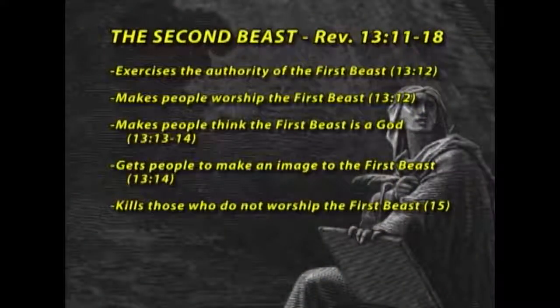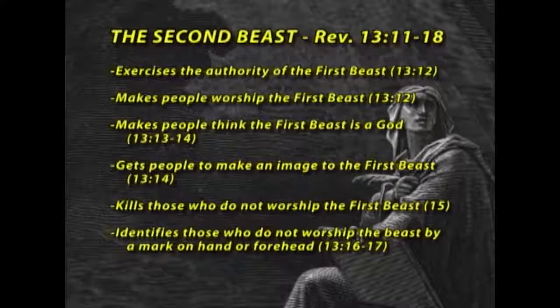Revelation 13, verse 15 tells us this beast killed those who did not worship the first beast. So this is some type of militia, a group of people going around enforcing, setting up images, and punishing people who don't worship the first beast. Revelation 13, verses 16 and 17 identifies those who worship the beast by a mark on their hand and forehead. Some kind of sign signified your allegiance to the beast, and it was this person's job to make sure that mark was clearly seen and known.